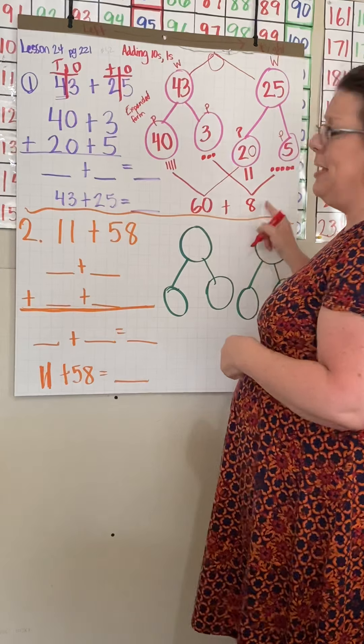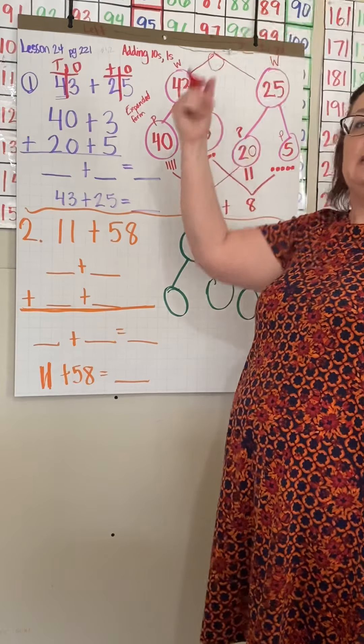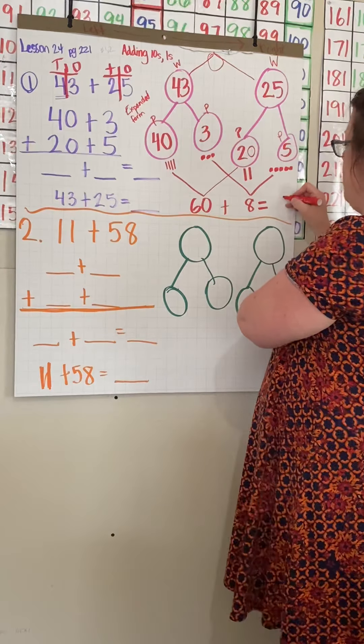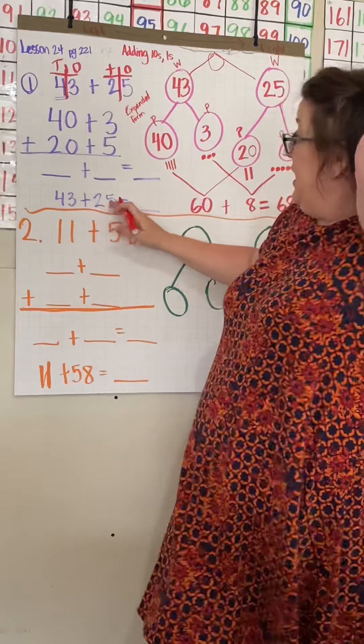So I need to put 60. And now I'm going to put my ones together. I have three ones and five ones. What's three plus five? Eight, right? Three plus five is eight. So now what is 60 plus eight? We're going to take that expanded form and put it back together. 60 plus eight is standard form, 68.